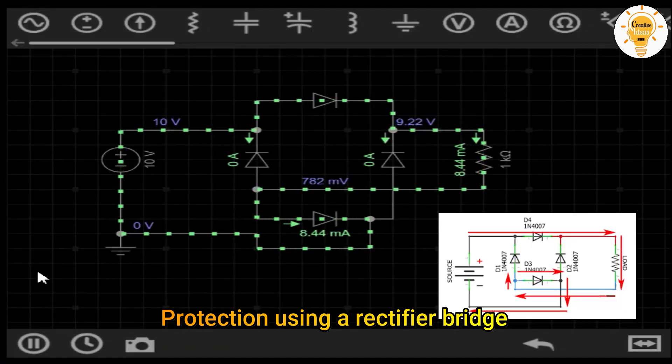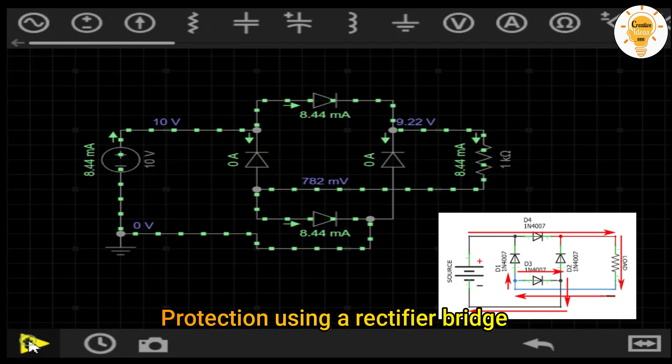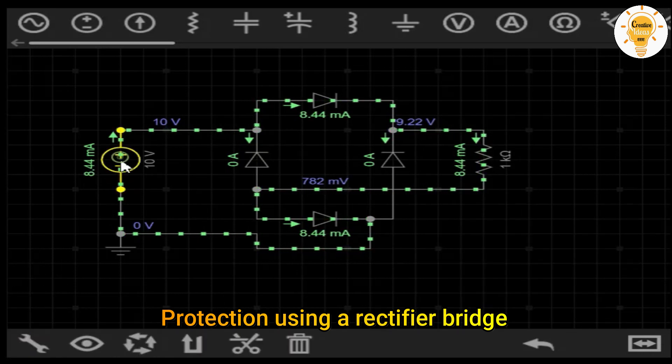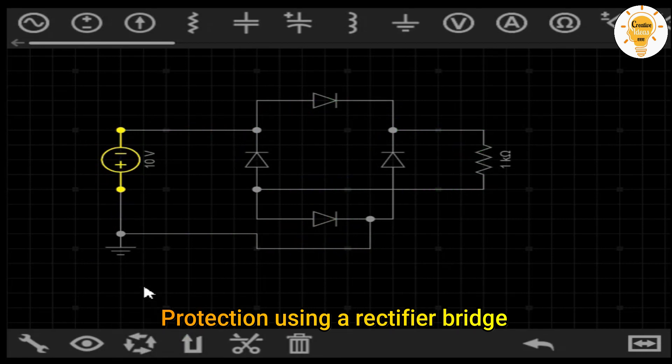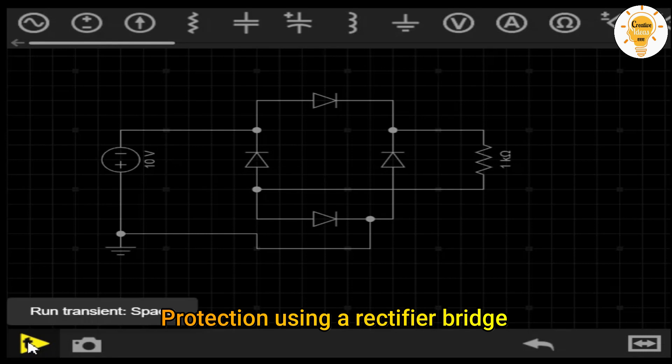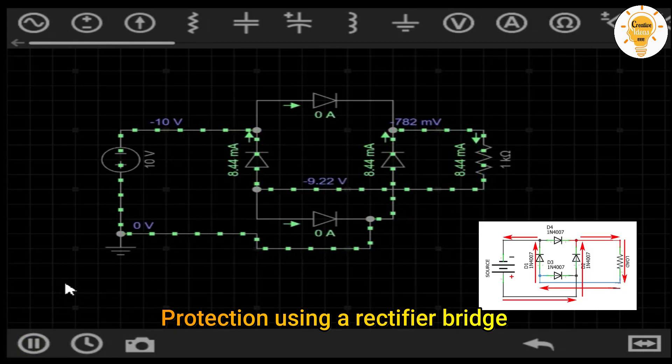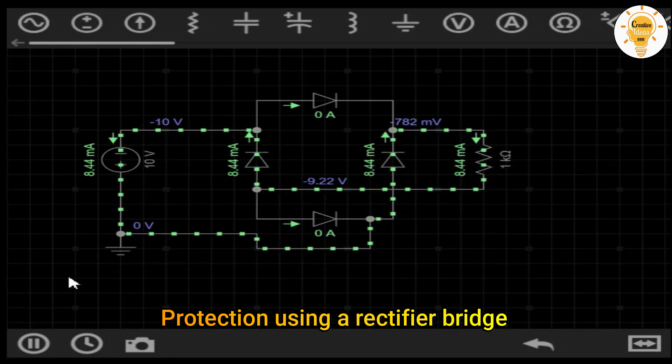When connected as shown in the image above, diode D1 blocks current because it is reverse biased. Therefore, the current follows the path of D4 to our load. Once it leaves the load, it finally goes through diode D3 until it reaches the negative pole of the source.